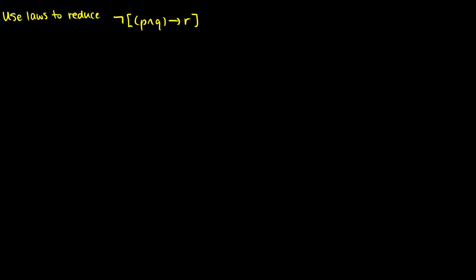So the first thing we'll do is use the definition of the conditional to change P and Q arrow R into NOT(P and Q) or R. Remember we have P arrow Q, this is the same thing as NOT P or Q. So those are equivalent. That's what we did in the first step.